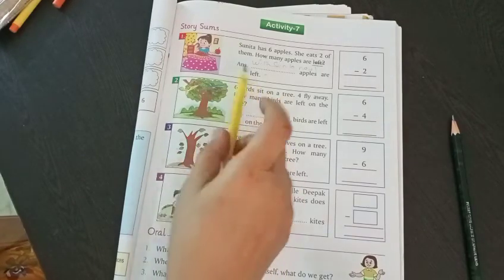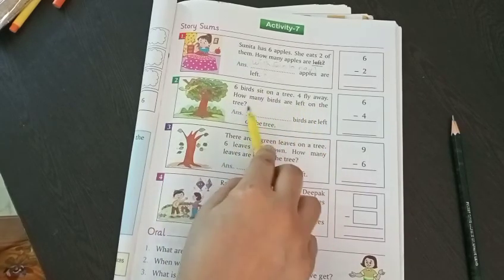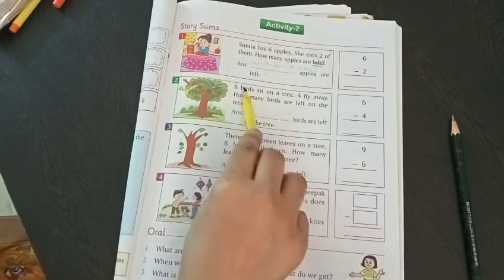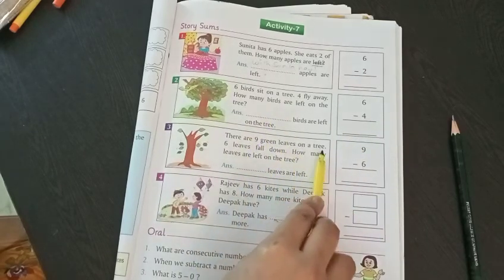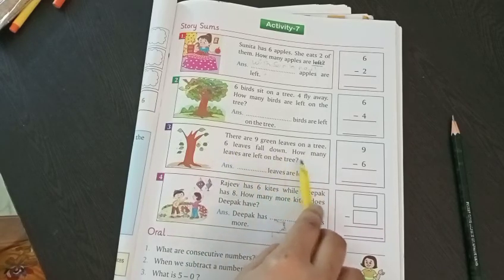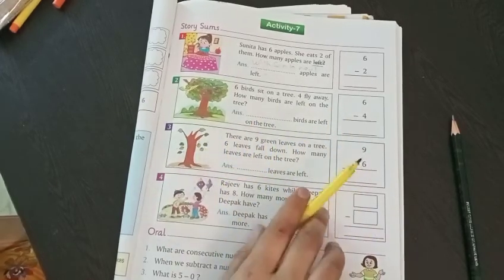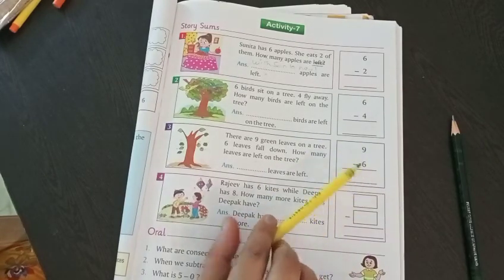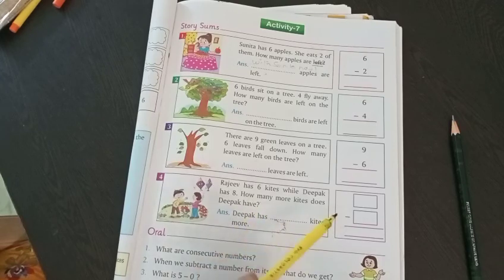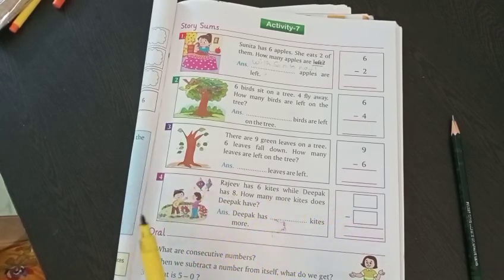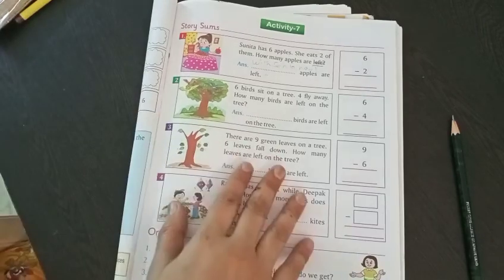Now come to your page number 49. The same question again. Six birds sit on a tree. Four fly away. How many birds are left on the tree now? So do the question, first try to understand, and then do the sum also and write the answer here. There are nine green leaves on a tree. Six leaves fall down. How many leaves are left on the tree? Rajiv has six kites while Deepak has eight. How many more kites does Deepak have? Here the blanks are given. You have to write the numbers and complete the sum. Do this in your book, page number 49, and practice more story sums.